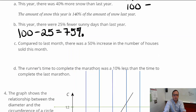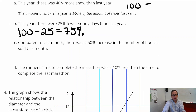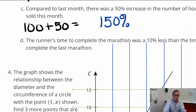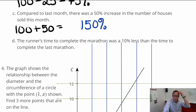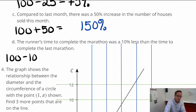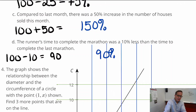Part C: compared to last month, there was a 50% increase in houses sold this month. So 100 plus 50 equals 150%. Part D: the runner's time was 10% less than the last marathon. Starting from 100% and taking away 10%, that's 90% — so it's 90% of the time the runner had last year.